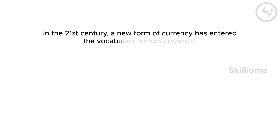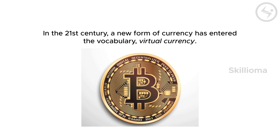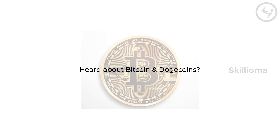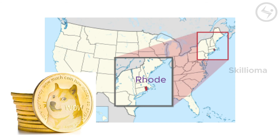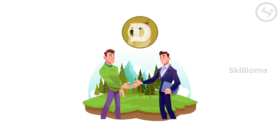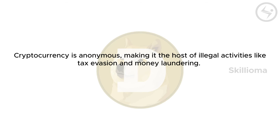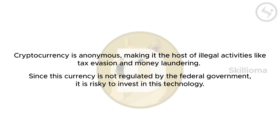In the 21st century, a new form of currency has entered the vocabulary: virtual currency. Virtual currencies such as Bitcoin have no physical existence or government backing and are traded and stored in electronic form. Did you know someone in Rhode Island bought land in exchange for Dogecoin? This is the evolution of money. However, there are limitations — cryptocurrency is anonymous, making it a host for illegal activities like tax evasion and money laundering. Since it is not regulated by the federal government, it is risky to invest in.